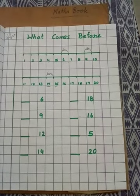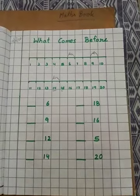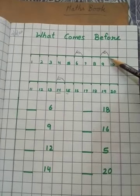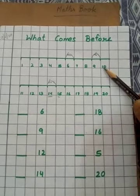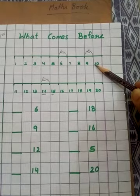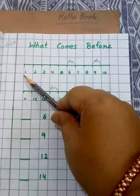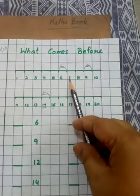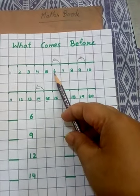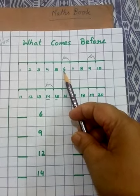When we count in the backward direction, the next number of the given number is before. Before number means when we count in the backward direction — जब भी हम numbers को, numerals को backward direction में count करते हैं, just like 10, 9, 8, 7, 6, 5, 4, 3, 2, 1. तो given number का next number, यानि जिस number का before हम पूछ रहे हैं, उसका next number backward direction में — यानि उसके पहले आने वाला number, before number होता है. For example,